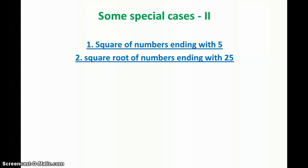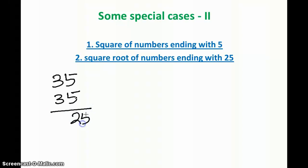Finding the square of a number ending with 5 is quite simple. Let's say I want to find the square of 35, that means 35 into 35. When we have 5, the unit place digits add up to 10. So you write 25 here, then take the next number after 3, which is 4, and multiply: 3 into 4 is 12. So 1225 is the square of 35.